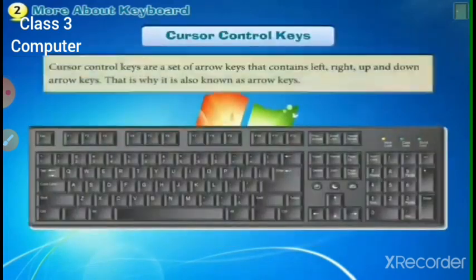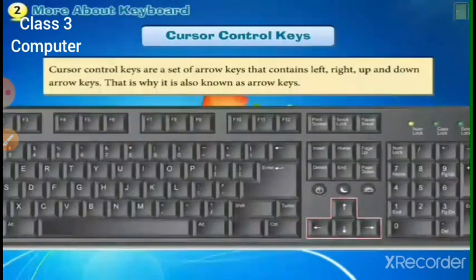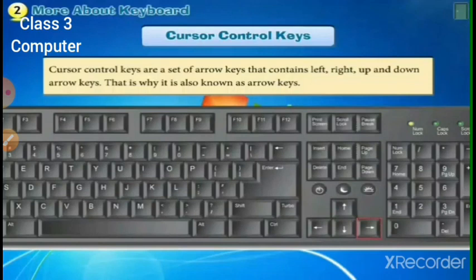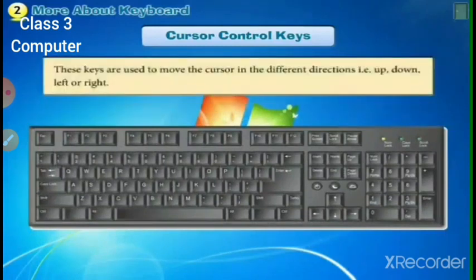Cursor control keys are the set of arrow keys that contain left, right, up, and down arrow keys — that is why they are also known as arrow keys. These arrow keys are used to move the cursor in different directions: up, down, left, or right.